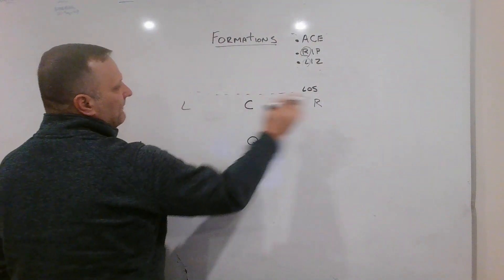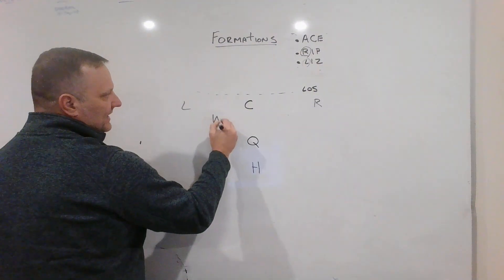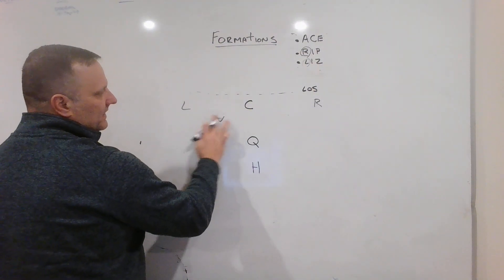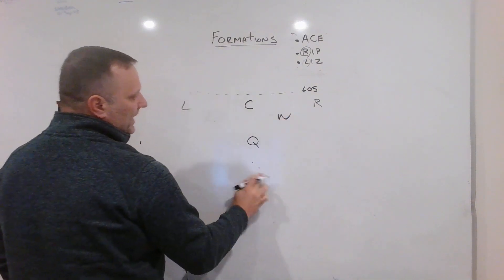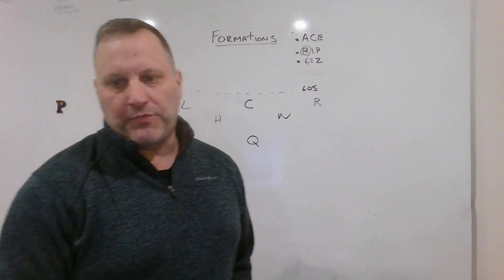Let's make sure we understand the left, right, wing, QB. That'd be RIP. That's LIZ, right? And then ACE, wing is right. There we go. All right, that is our formations.